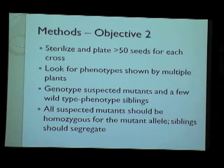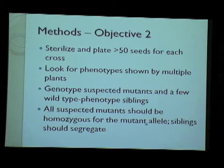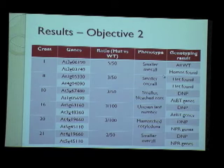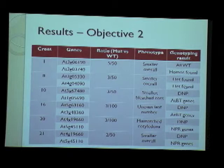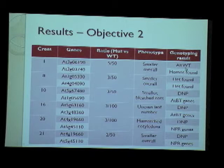For the suspected mutants we picked out, we genotyped them alongside a few siblings showing the wild-type phenotype. We expected suspected mutants to be homozygous for both mutant alleles and siblings to segregate. From the screen, genotyping each cross at both loci revealed that in some cases plants were heterozygous at both loci, meaning the phenotype was not due to our mutant genotype. In other cases, one locus gave only wild-type bands with no heterozygotes, suggesting the phenotype was due to natural variation and that the original cross had not worked.